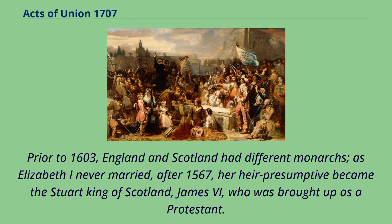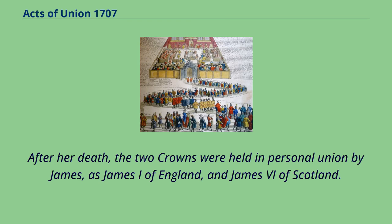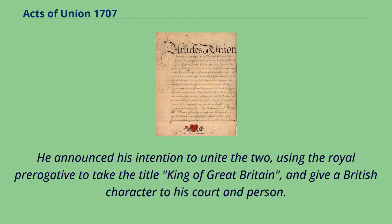Prior to 1603, England and Scotland had different monarchs, as Elizabeth I never married. After 1567, her heir presumptive became the Stuart King of Scotland, James VI, who was brought up as a Protestant. After her death, the two crowns were held in personal union by James, as James I of England and James VI of Scotland. He announced his intention to unite the two, using the royal prerogative to take the title King of Great Britain, and give a British character to his court and person.